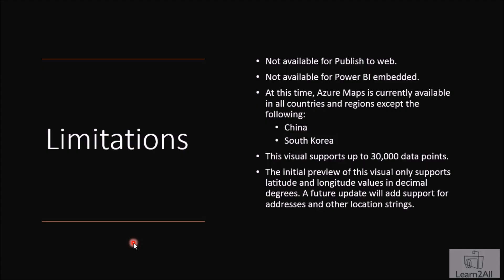Now let me talk about some considerations and limitations to keep in mind. First, it is not available for Publish to Web and Power BI Embedded. It does not currently support China and South Korea regions. This visual supports up to 30,000 data points on the map. The initial preview only supports latitude and longitude values in decimal degrees; future updates will add support for addresses and location strings.